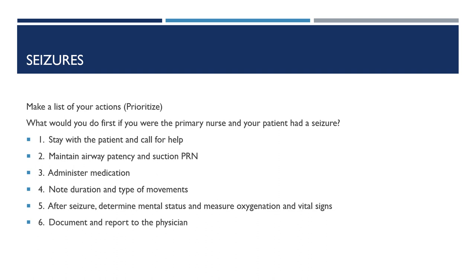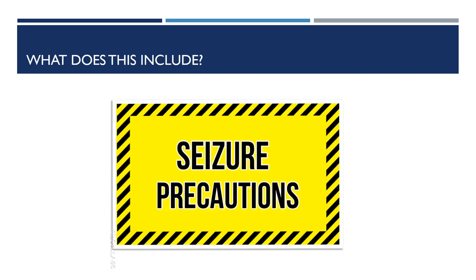Explain to the patient what happened, provide comfort and understanding, and a quiet environment for recovery. Continue to monitor oxygenation and vital signs. Roll them on their side to help with aspiration risk if there is hypersalivation. Be very descriptive in documenting what occurred: movements, injuries, duration, aura, postictal state. Seizure precautions entail oxygenation and suctioning, a safe environment, and lots of education — not only for the patient but also family education. If they have a seizure, who do they call? What do they do? Never put anything in their mouth during seizure activity, and never restrain the patient.